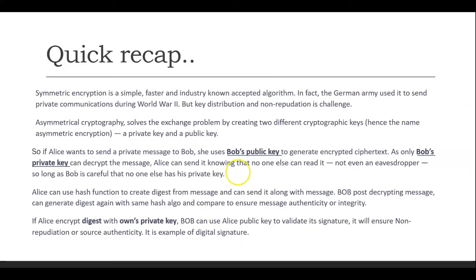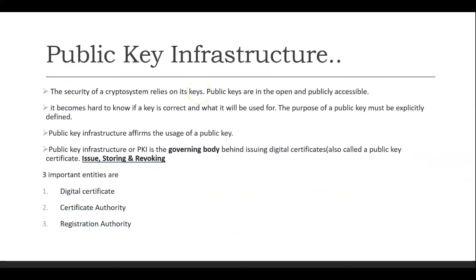We also saw the man-in-the-middle attack: if Alice is using a public key assuming it is Bob's, but someone has modified it, the message will go to someone else. Even though Alice is following the right process, it is not reaching Bob and someone else can see the message. We will cover how Public Key Infrastructure addresses this. The security of the keys is most important, and is heavily tested in the CCSP exam. Public keys are publicly accessible, and it is hard to verify whether a key is correct or what purpose it was created for.